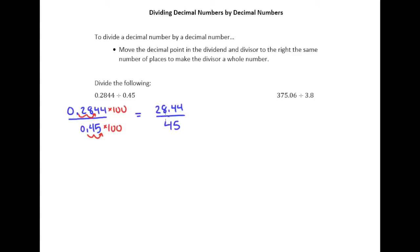If this fraction is equal to this fraction and fraction bars are the same as division signs, then what we can comfortably say is that 0.2844 divided by 0.45 is the same as 28.44 divided by 45. And so the division we're actually going to perform is on 28.44 divided by 45.